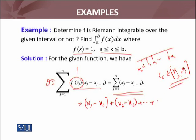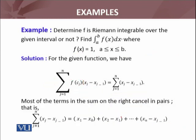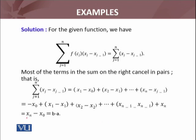If we expand this summation, we get (x1 - x0) + (x2 - x1) + ... + (xn-1 - xn-2) + (xn - xn-1). You can see that x1 is positive in one term and negative in the next, and similarly all intermediate terms cancel out. xn-1 cancels with the preceding term, and we are left with xn minus x0, which equals b minus a. So the Riemann sum equals b minus a.